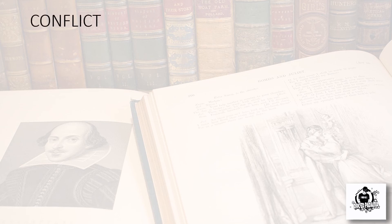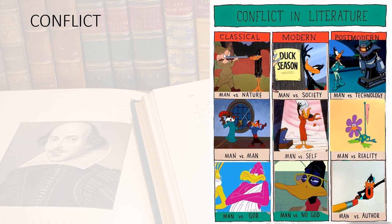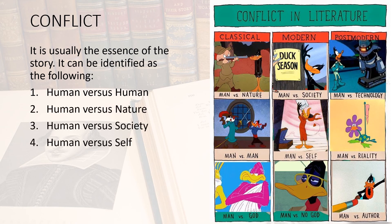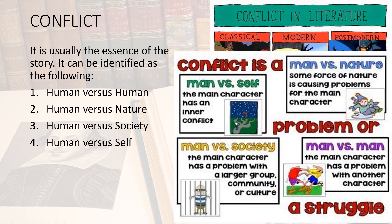The next element is conflict, defined as the essence of the story. It can take the form of human versus human, human versus nature, human versus society, or human versus self. Man versus self means the main character has an inner conflict. Man versus nature means some force of nature is causing problems for the character. Man versus society means the main character has a problem with a larger group, community, or culture. Man versus man means the main character has a problem with another character.